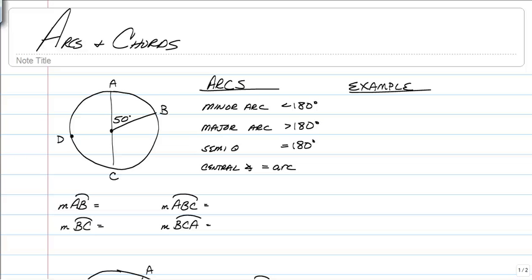All right, here we go on a video about arcs and chords. Arcs, that's basically a piece of a circle. For example, if we just drew a curve from A to B, that's called an arc.